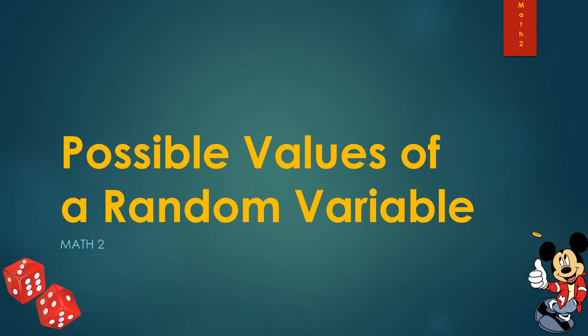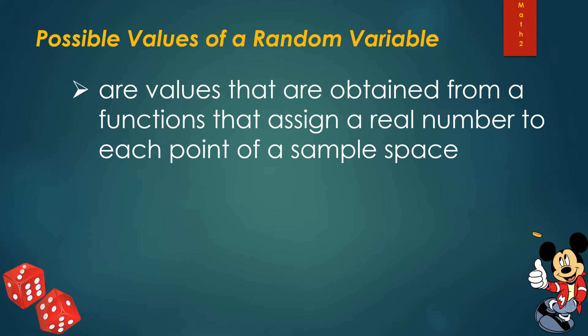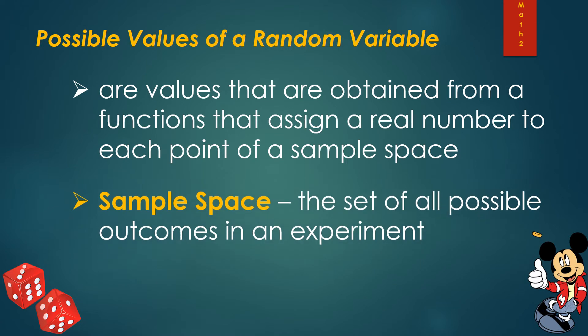Welcome to another math day with Teacher Jenny. This time we're talking about possible values of a random variable. When we say possible values of a random variable, they are values obtained from a function that assigns a real number to each point. Your possible values are really dependent on whatever your experiment is and whatever your random variables are, so you must have a defined random variable.